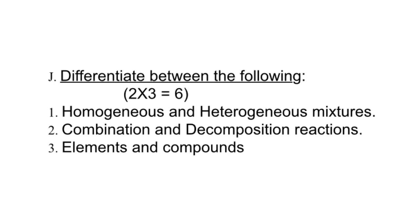Then the third difference is between an element and a compound. We know element is a pure substance made up of one type of atom only, for example gold. A compound is also a pure substance which is made up of two or more elements combined in a fixed proportion. So a compound always has a formula whereas an element is always denoted by a symbol.